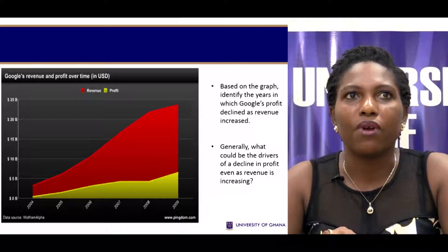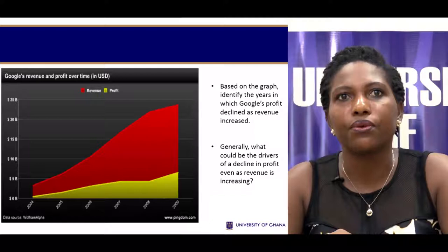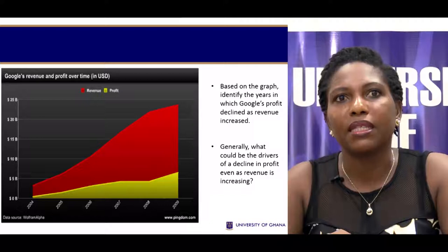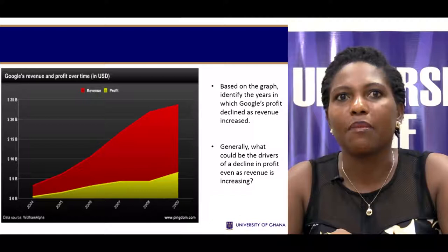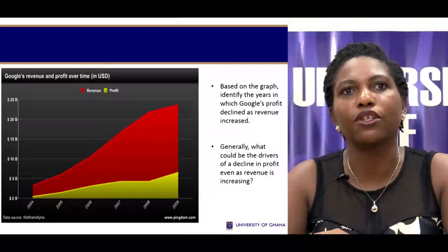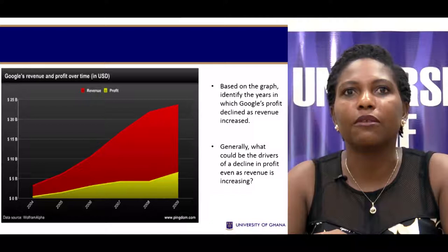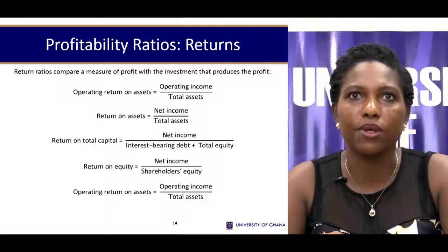A graph shows Google's revenue and profit from 2004 to 2009, with revenue in red and profit in yellow. From 2007 to 2008, revenue was rising while profits stabilized, suggesting expenses were rising faster than revenue. By 2008 to 2009, this trend reversed — suggesting that after analyzing their financials and identifying the drivers, they rectified the issues and restored the pattern of profits rising with revenue.